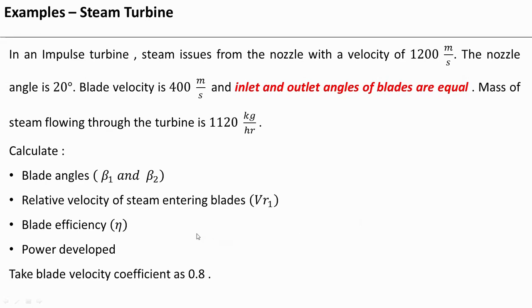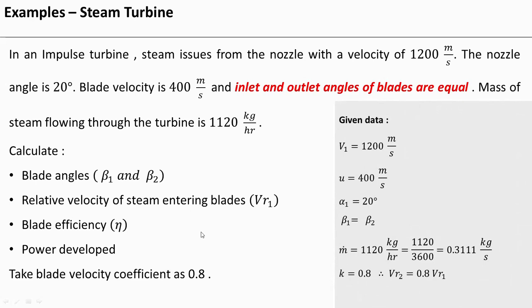In this video we will see how to solve examples on steam turbine graphically. In an impulse turbine, steam issues from the nozzle with a velocity of 1200 meter per second, so the absolute velocity at inlet V1 is 1200 meter per second. The nozzle angle alpha1 is 20 degree.